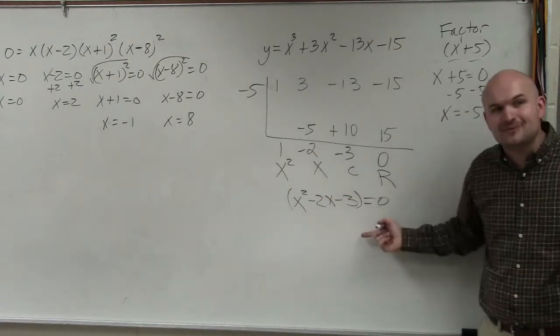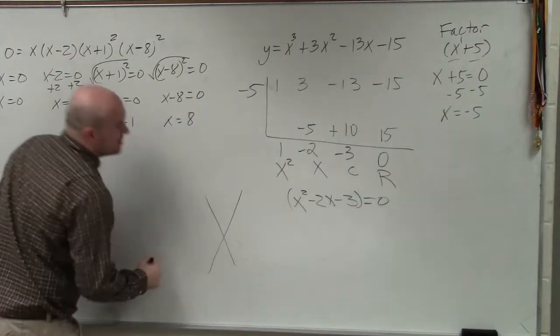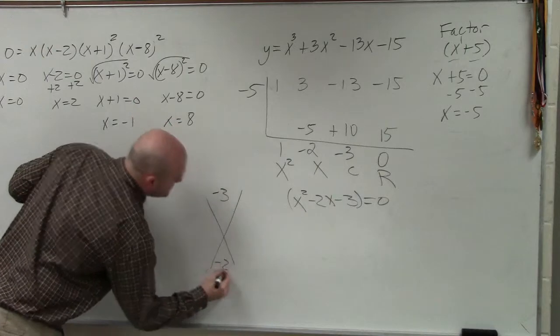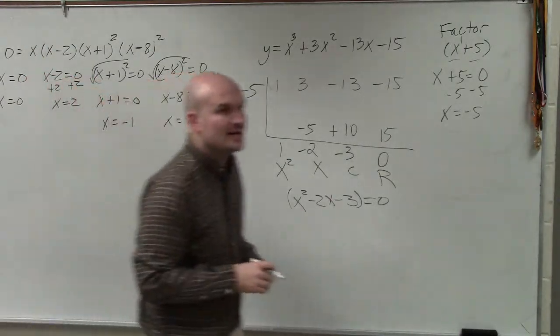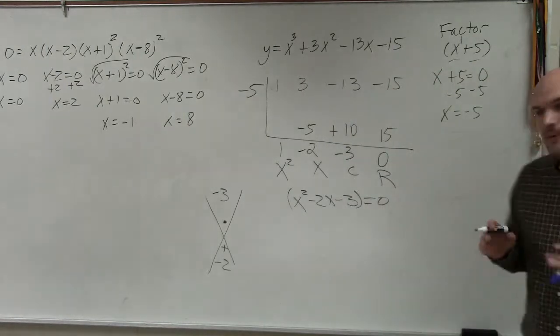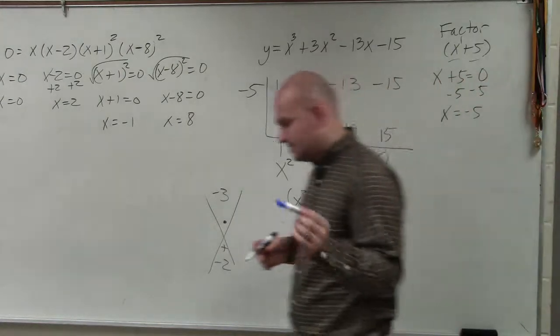Now, again, we have to use factoring the diamond. So I create a cross. And I say negative 3 and negative 2. What two numbers multiply to give you negative 3 and then add to give you negative 2? Negative 3 and 1. Yes, Crystal?